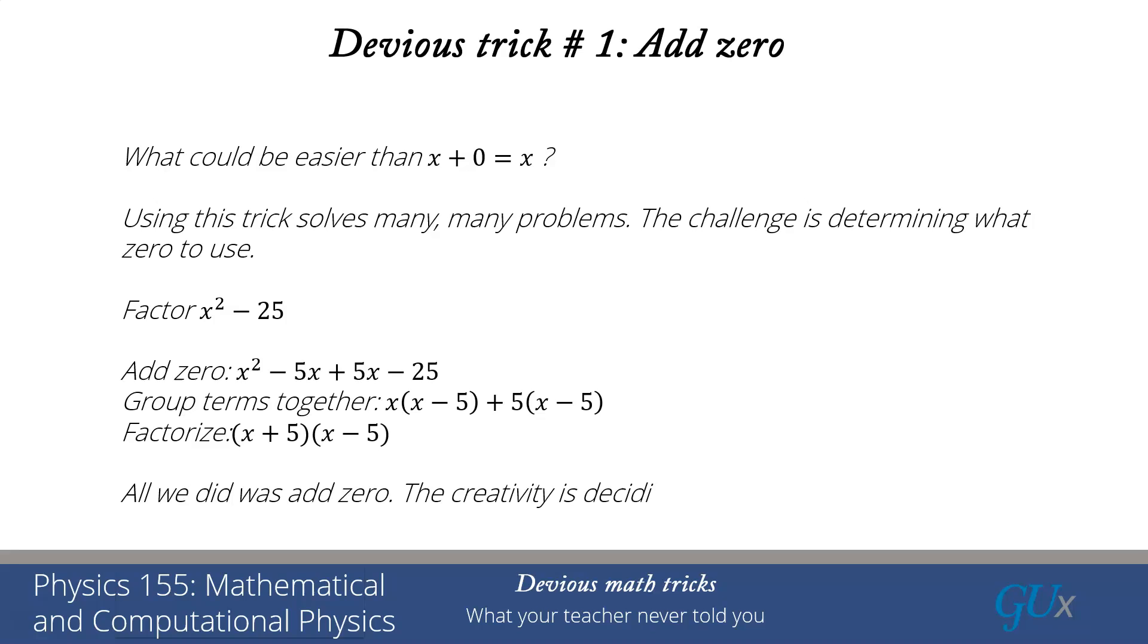And all we did was add zero. You might say that's really a lot of work, I already knew the factorization. The key is that the add zero trick allows you to derive many new identities that you didn't know simply by recognizing that adding the right zero allows you to solve the problem when it looked intractable before.